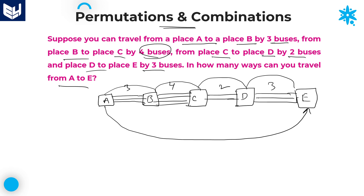If I choose any bus from A to B, I can then choose any of those four buses from B to C, after that any of those two from C to D, and then any of the three from D to E. The same choices apply regardless of which first bus I pick. So if you want to get the answer in the simplest manner, just multiply all the given values: three into four into two into three.